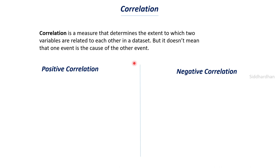Positive correlation means two variables have direct proportionality — if one increases the other also increases, or if one decreases the other also decreases. They move in the same direction. Negative correlation is when one value increases and the other decreases, or vice versa — their movement is in opposite directions. Positively correlated variables are directly proportional and negatively correlated variables are inversely proportional.